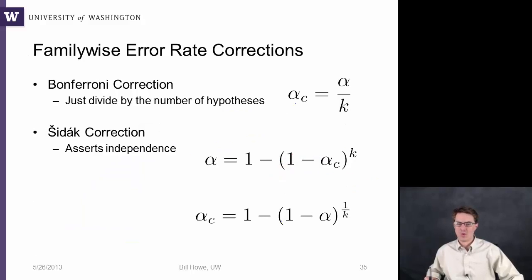Well, one solution is the Bonferroni correction, which is just to divide by the number of hypotheses. So if your significance level is alpha 0.05 and you do 20 experiments, you're testing 20 hypotheses, you just divide 0.05 by 20.